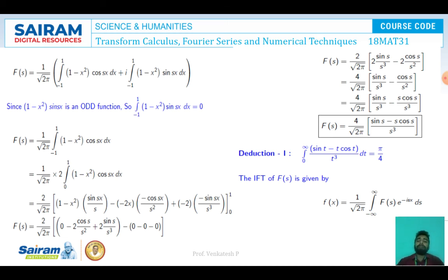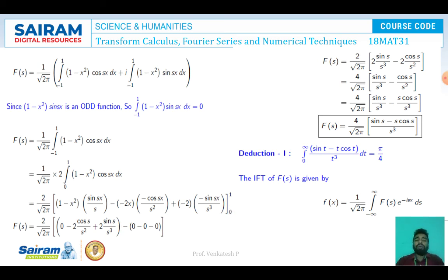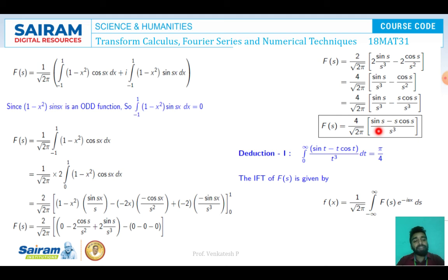Applying the upper limit: 0 - 2 cos(s)/s² + 2 sin(s)/s³; the lower limit gives zero. Simplifying: F(s) = (2/√(2π)) · (2 sin(s)/s³ - 2 cos(s)/s²) = (4/√(2π)) · (sin(s)/s³ - cos(s)/s²) = (4/√(2π)) · (sin(s) - s cos(s))/s³.